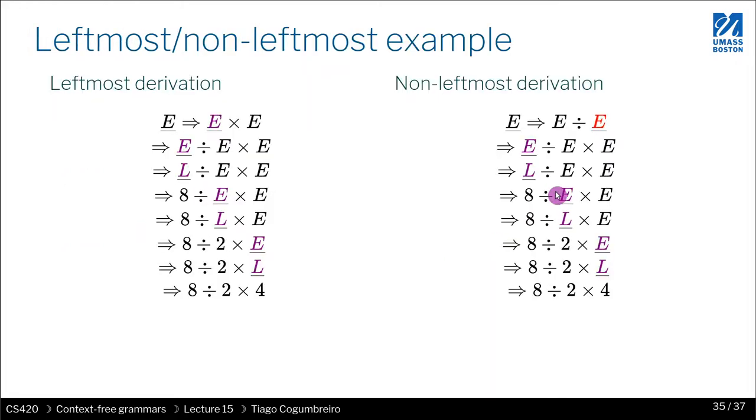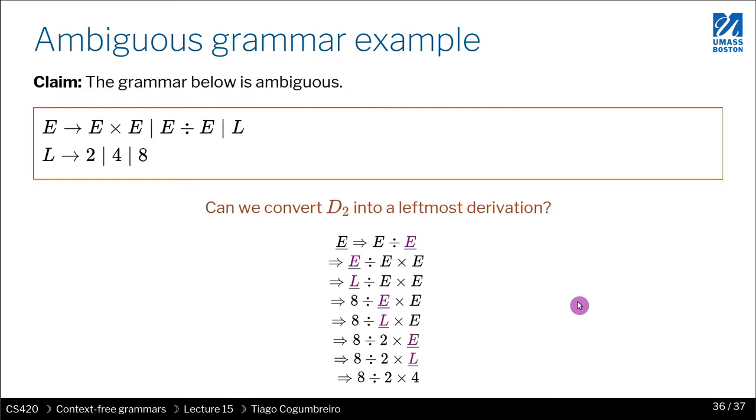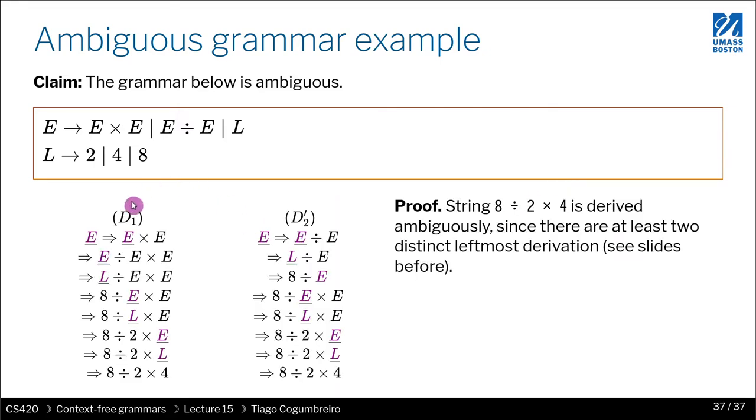Okay, so let's see an example. This is a leftmost, and this is a non-leftmost, which is just the example I showed you before. And now I want to show you an example of ambiguity. So in this example, we are always doing leftmost. In this example, we're always doing leftmost.